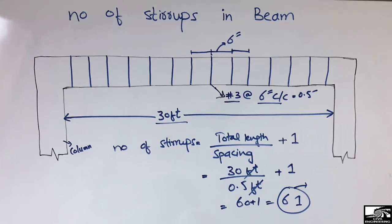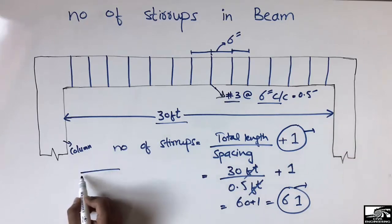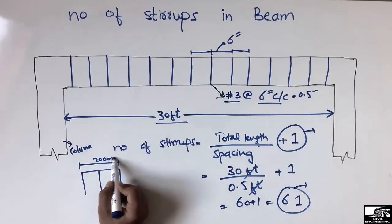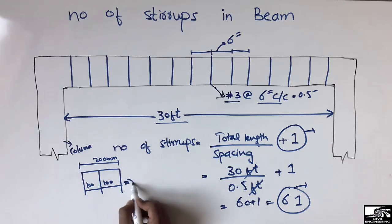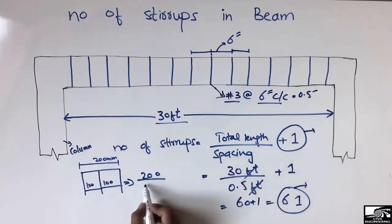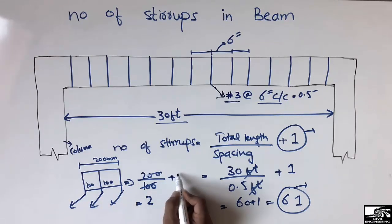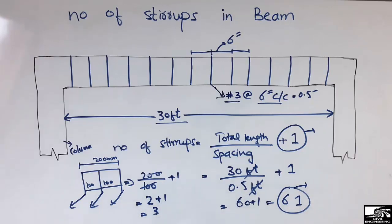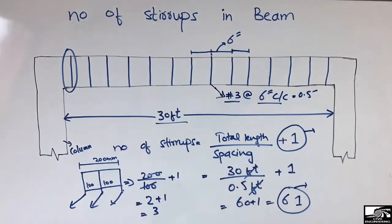Now let's understand why we add one. Consider three stirrups where the total distance is 200 millimeters and the spacing between each stirrup is 100 millimeters. If we use the formula without the plus one: 200 divided by 100 equals 2 — but the actual number of stirrups is three (one, two, three). That's why we add one — to account for the last stirrup and get the exact number.